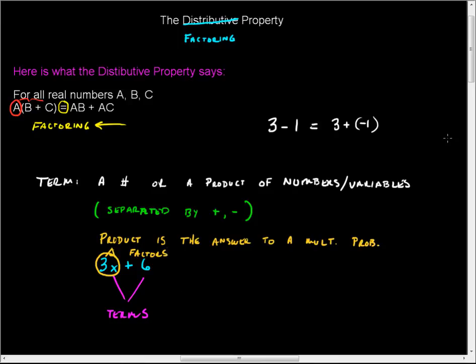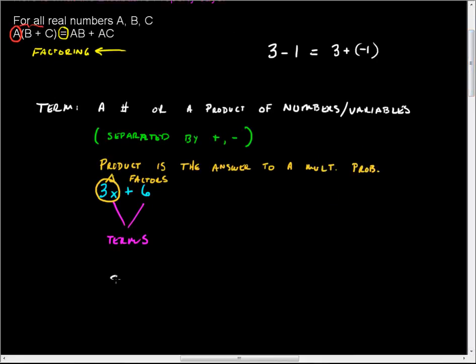So remember, in 3x plus 6, I have two terms. Term 1 is 3x. Term 2 is 6. 3x has two factors. 3 and x are factors.